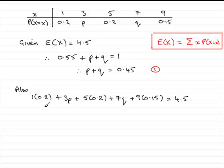So if you work out all of this side here, 1 times 0.2 and 5 times 0.2 and 9 times 0.15, what you should find is that you get 2.55 and then you've got plus the 3P here and the 7Q here and that comes to the 4.5 over there.